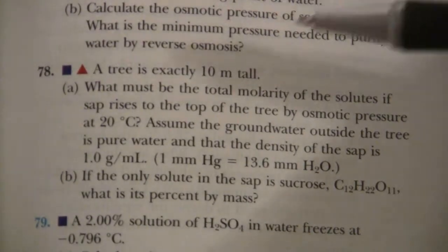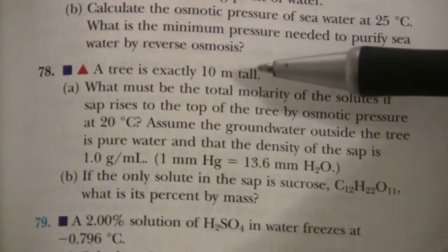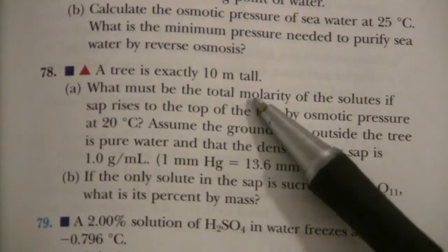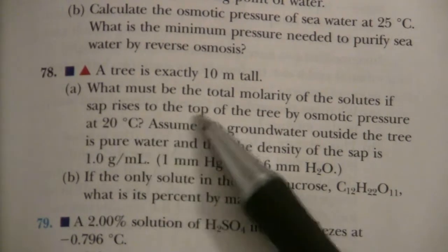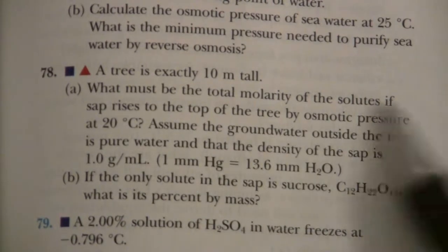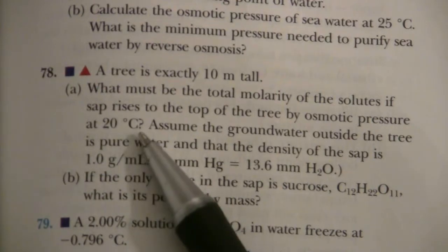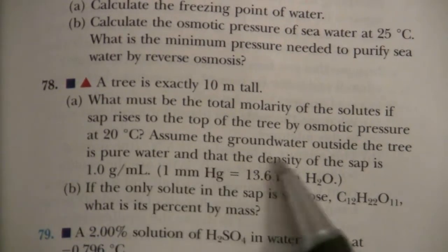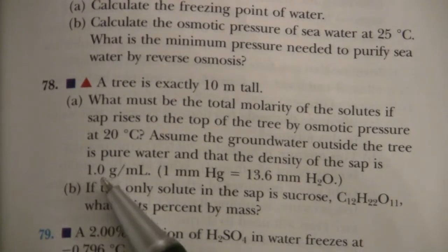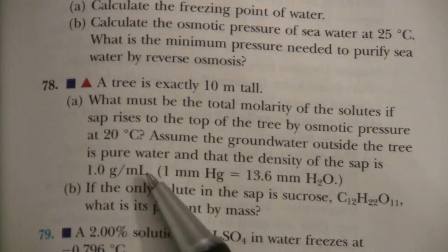In this problem it says that a tree is exactly 10 meters tall, and it's asking for the total molarity of the solutes if sap rises to the top of the tree by osmotic pressure at 20 degrees C. We're assuming that the groundwater outside the tree is pure water and the density of the sap is 1 gram per milliliter.